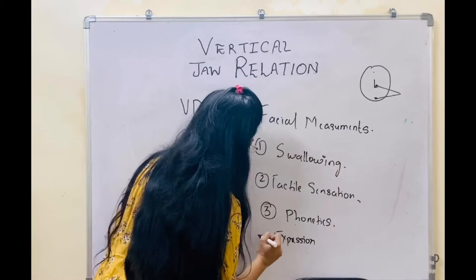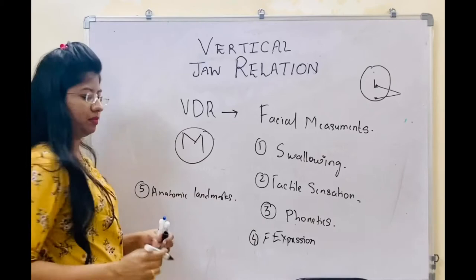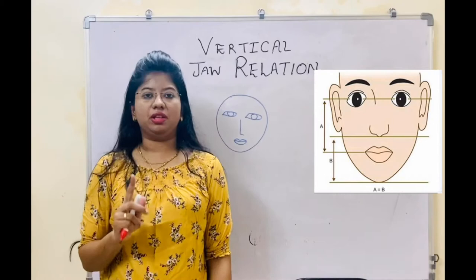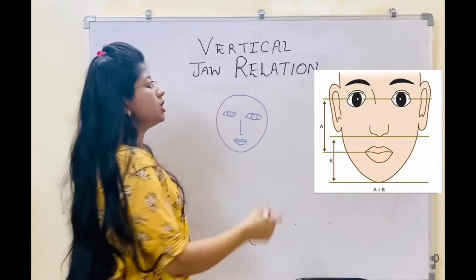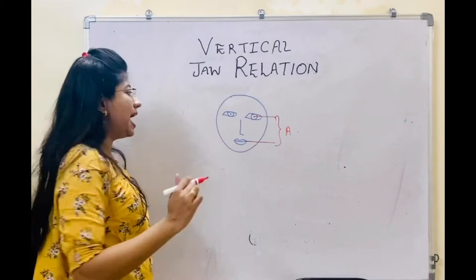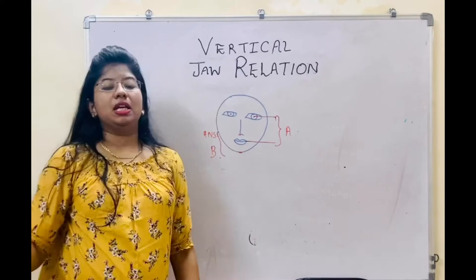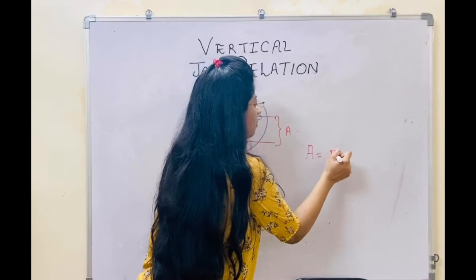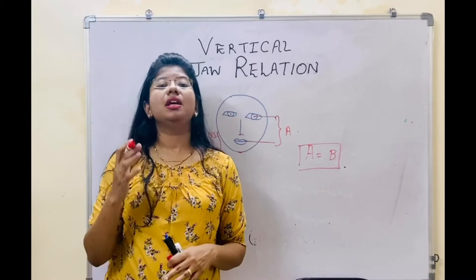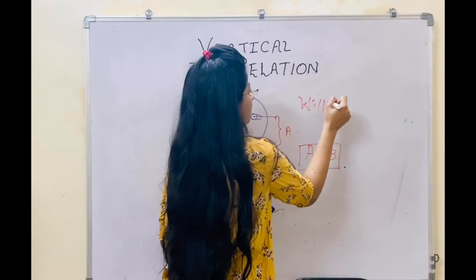The fourth and important method is anatomical landmarks. The distance from the pupil to the corner of the mouth — that is the commissure — is considered as A. From the anterior nasal spine to the lower border of the mandible is considered as B. In the position of rest, A will be equal to B. You can measure this with the help of Willis's guide, which is used to determine this and helps give you the vertical dimension at rest.